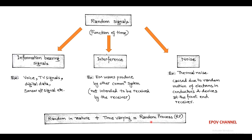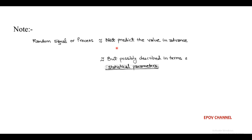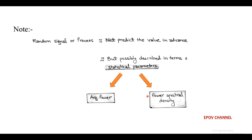Now, here we note a point. Since the value of a random signal or process cannot be predicted in advance, but it can be analyzed statistically in terms of parameters. And these parameters are average power and power spectral density.